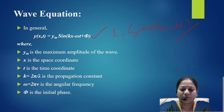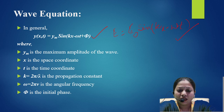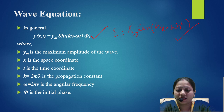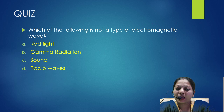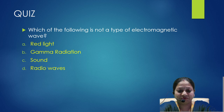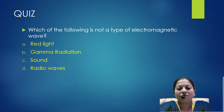Here x is the position coordinate, t is the time coordinate, k = 2π/λ is the propagation constant, ω = 2πν is the angular frequency, and φ is the initial phase. Now a quiz question: which of the following is not a type of electromagnetic wave — red light, gamma radiation, sound wave, or radio wave? Think about which one is not an electromagnetic wave.